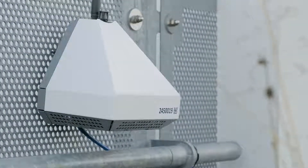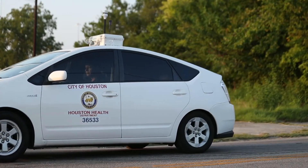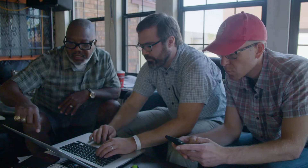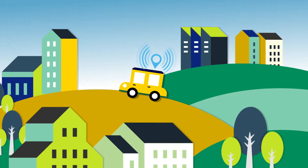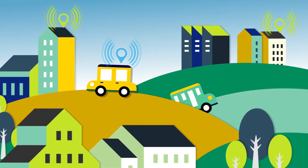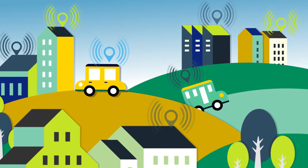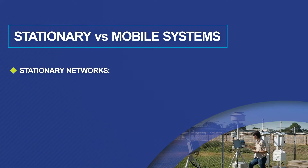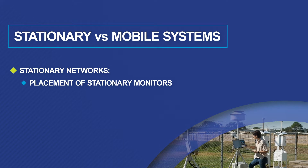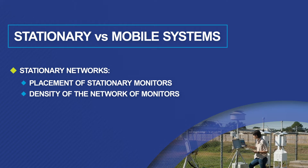Let's review stationary and mobile monitoring networks and some of the questions that should drive your design. Should you deploy a network of fixed sensors, mobile sensor systems, or both? For fixed networks, where should you place stationary monitors? How dense should your network of monitors be?